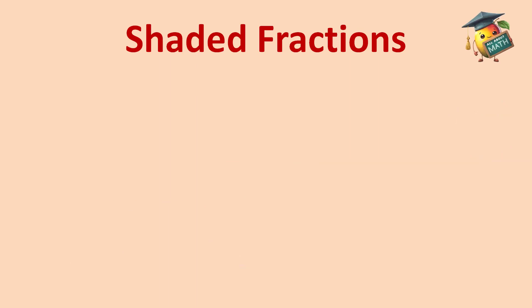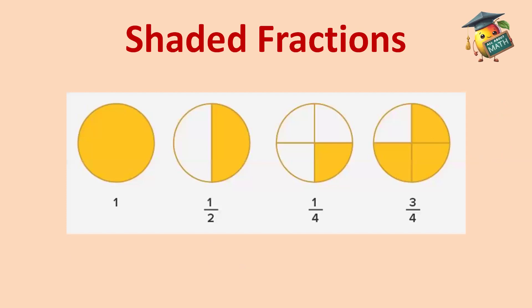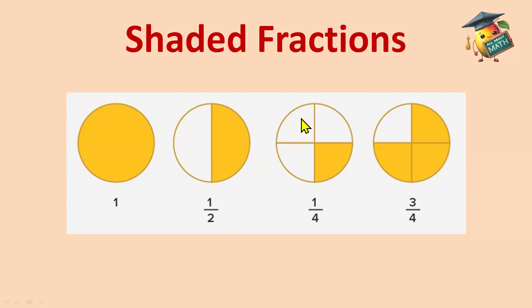Let's see some more shaded fractions. Here you can see an example: the full shape is shaded. If I divide it into 2 equal parts, the denominator is the total number of parts — which is 2 — and the shaded is 1 part, so it's 1 by 2. Now here the circle is divided into 4 parts: 1, 2, 3, 4. The denominator is 4, and 1 is shaded, so it's 1 by 4.